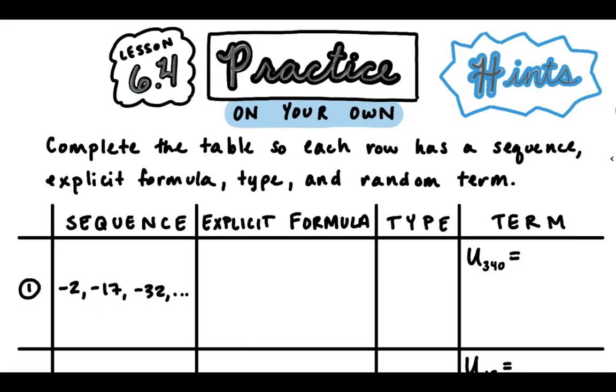Hi guys! Welcome to the hints video for Lesson 6.4 On Your Own. I'm going to go through how to get started on some of these. For the first two we're looking for the explicit formula, the type, and the missing term.